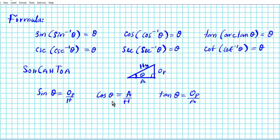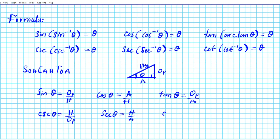From these three ratios we can generate the reciprocal trig ratios. Reciprocating sine gives cosecant: cosecant is hypotenuse over opposite. Secant theta is hypotenuse over adjacent — obtained by flipping cosine. And cotangent, the reciprocal of tangent, gives cotangent theta as adjacent over opposite. These are the six trig ratios using SOH-CAH-TOA.